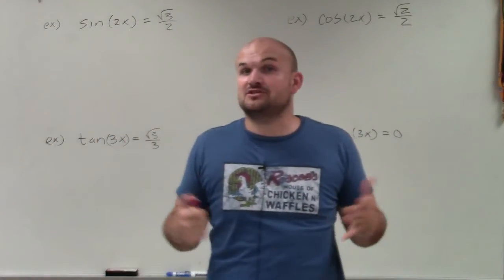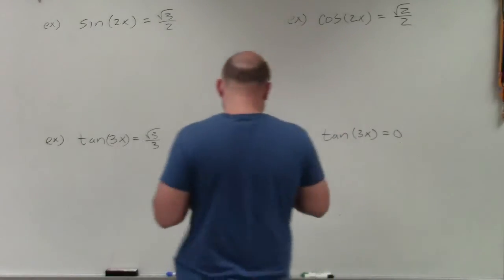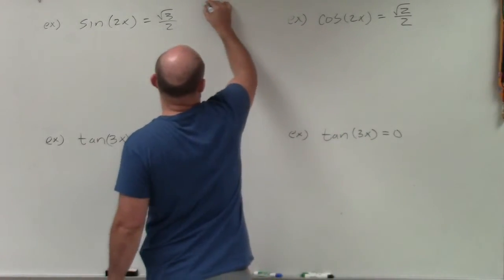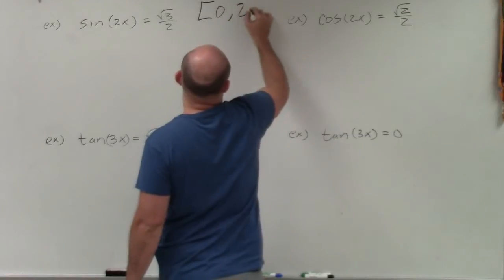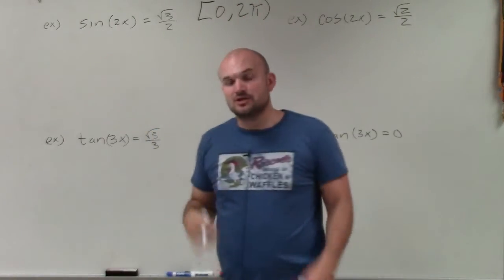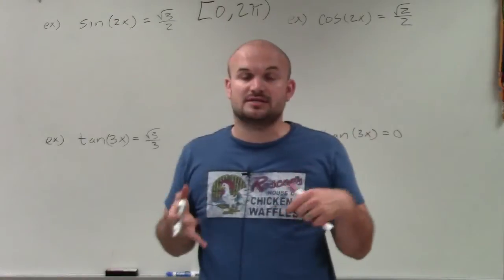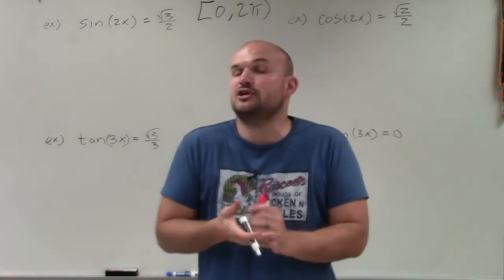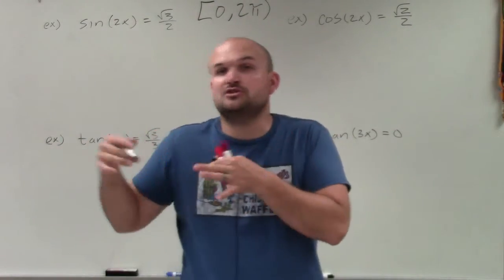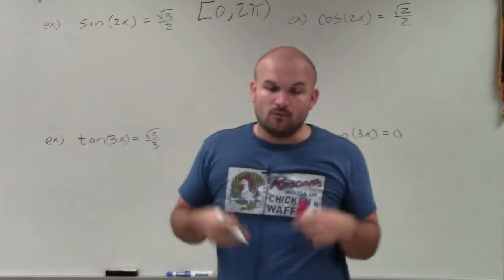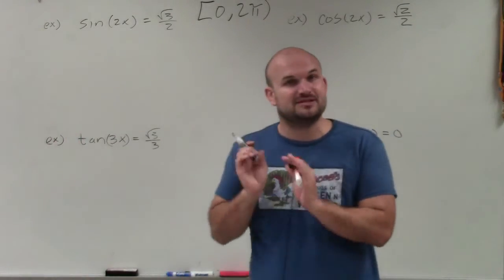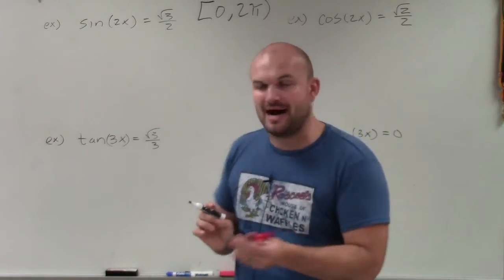It is going to affect our solutions, and it's something very important. We are now going to choose solutions that are between 0 and 2π. Previously, in other videos, I showed you how to find all of the solutions by adding your multiplier plus 2πn or πn. Well, now we're just going to find only the solutions that are contained between 0 and 2π.